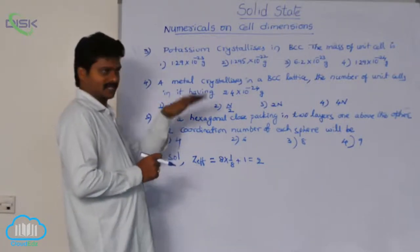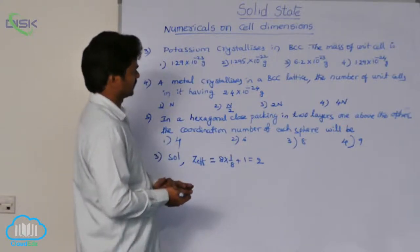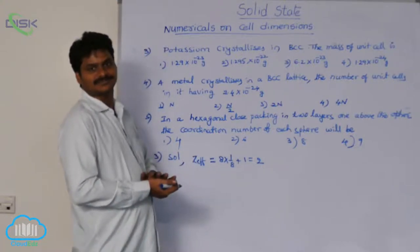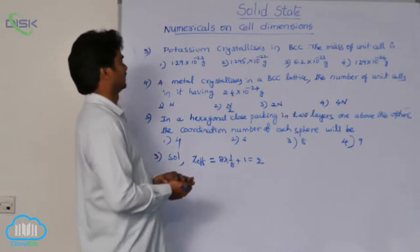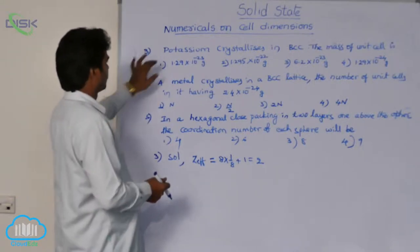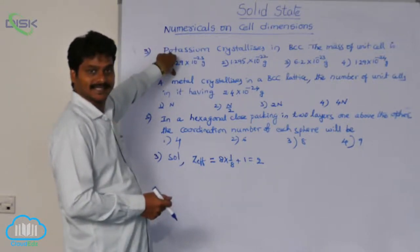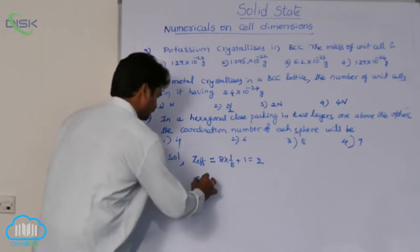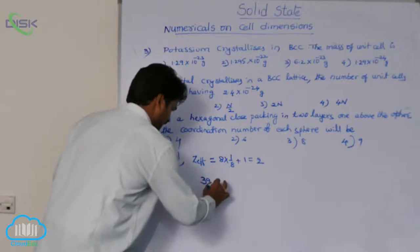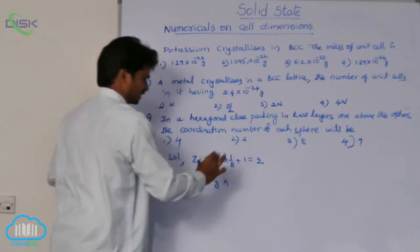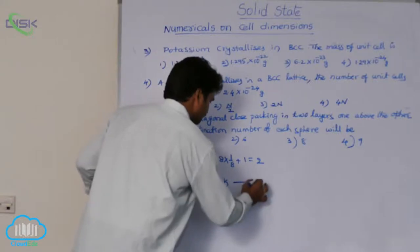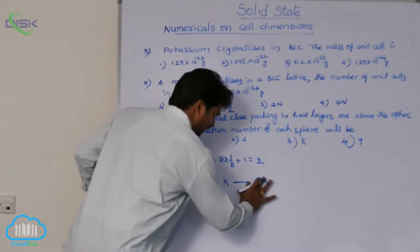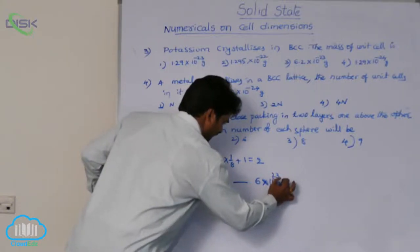One unit cell of potassium contains 2 atoms. We need to find the mass of those 2 atoms. Potassium's atomic weight is 39. So 39 grams of potassium contains Avogadro's number of atoms — approximately 6×10²³ atoms.